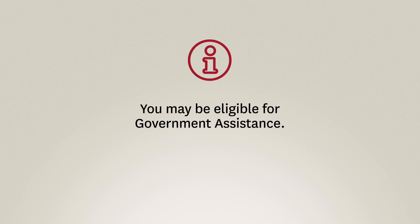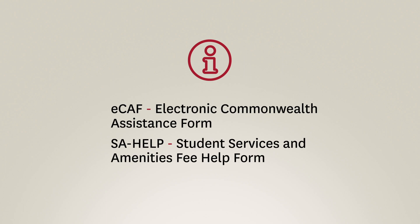Depending on the offer you've received, you may be eligible for government assistance. If you're eligible, you'll need to submit an Electronic Commonwealth Assistance Form, or ECAF, and a Student Services and Amenities Fee Help Form, also called SA-HELP, if applicable.